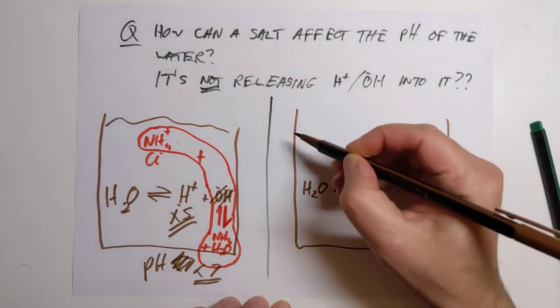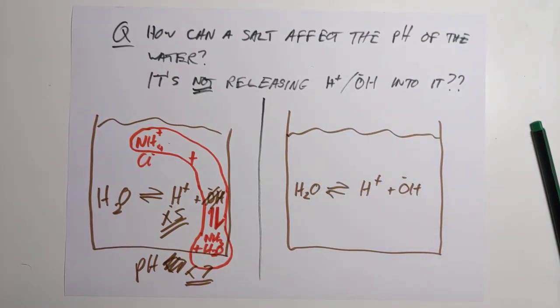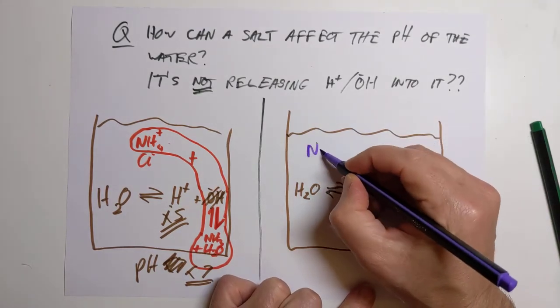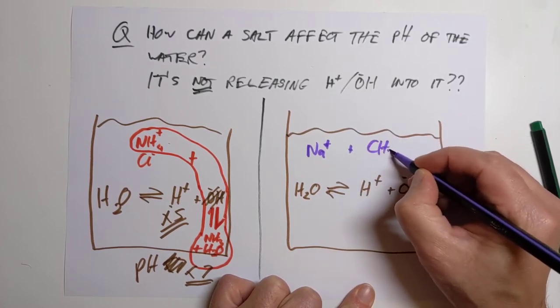Let's have a look over here at the other salt we had, which was sodium ethanoate. If we plop that into the water, you will get sodium ions being released, and you'll get ethanoate ions being released.